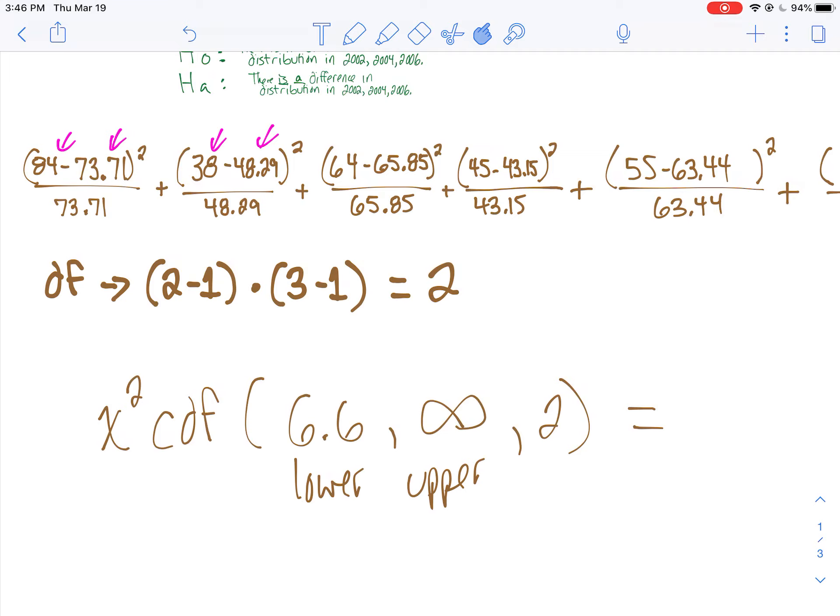So okay, 6.6, 9999999, 2. Alright, and when I did that, I got about 0.0368, somewhere in that ballpark. Pretty low p-value.